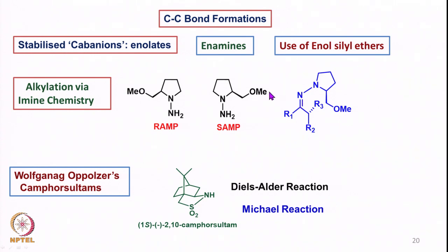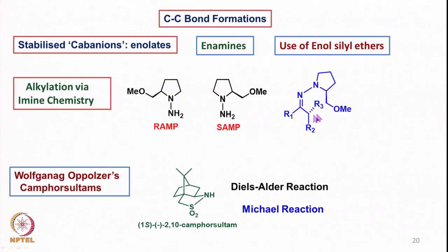Then we did C-C bond formations of various kinds: starting with how enolates allow C-C bond formation and their drawbacks, then how enamines emerged, then how enol silyl ethers emerged with their limitations and positive aspects. Then we proceeded via alkylation through imine chemistry, which led to the introduction of RAMP and SAMP auxiliaries, allowing C-C bond formation in an enantioselective fashion. In the same context, Wolfgang Oppolzer's camphor sultams were introduced to allow Diels-Alder and Michael reactions.